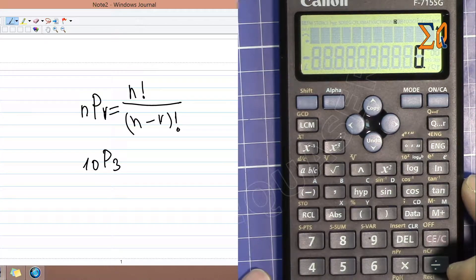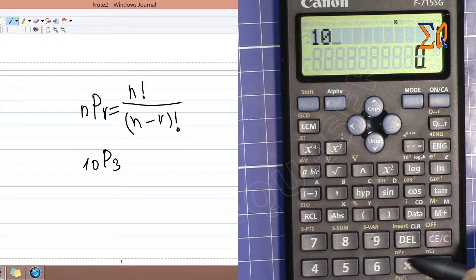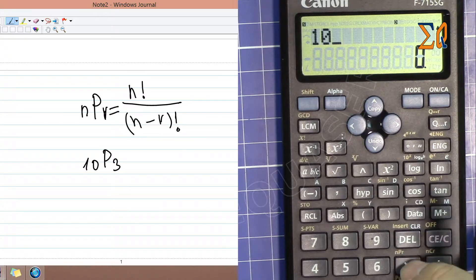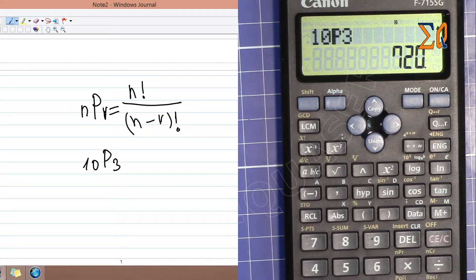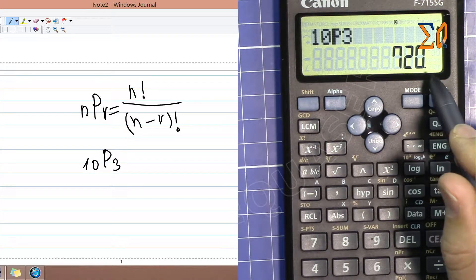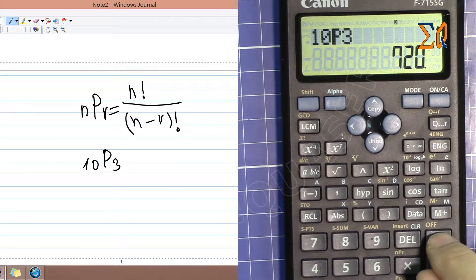How you do it is you type 10 first, and then press shift. You will see P here, and then press 3. That is the permutation for these two values.